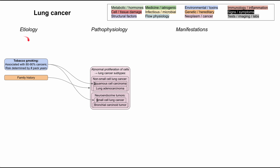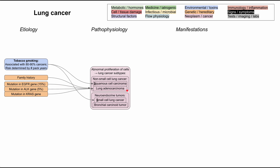Some other etiologies of lung cancer: family history predisposes you to lung cancer in general — if a parent or close relative has lung cancer, you may be predisposed. There are also specific mutations that predispose you, including mutations in the EGFR gene, the ALK gene, and the KRAS gene.